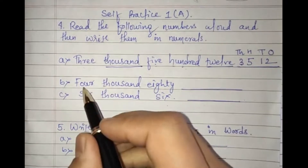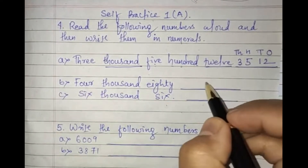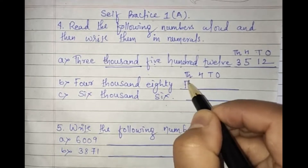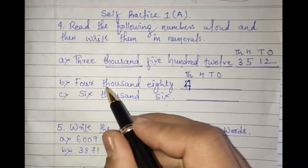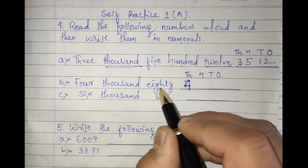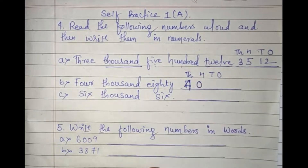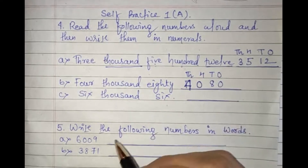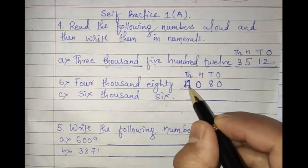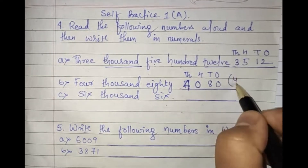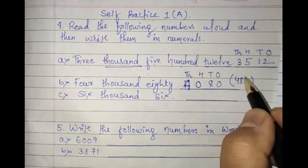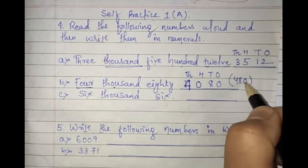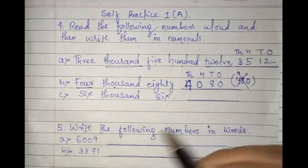Next: 'four thousand eighty.' Four is in the thousands position. Eighty means there is no hundreds place, so zero goes in hundreds. Eighty is in tens and ones — eight and zero. So we write 4080, not 480. Most students make this mistake and write 480, which would put four in the hundreds position, which is incorrect.